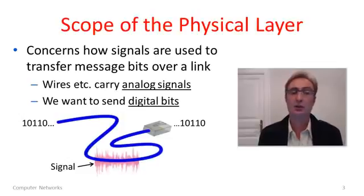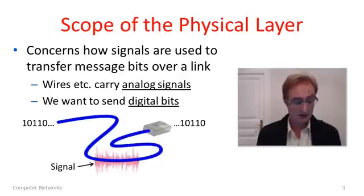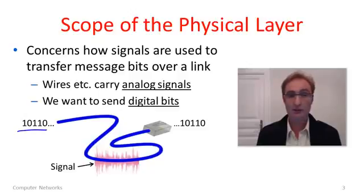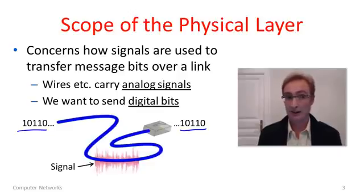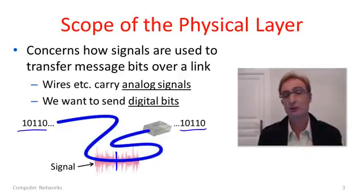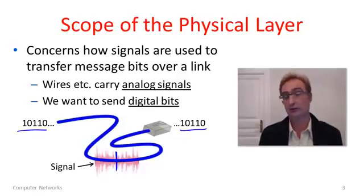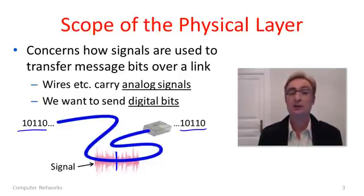The physical layer is all about how we use signals to represent bits so that we can convey bits across a physical channel or a simple link from one end to the other. If we just consider a wire as an example, we've got bits going in on the left — binary digits, the message we want to send — and bits coming out on the right. But if you were to cut the link in the middle, you wouldn't see these bits anywhere. What's carried across a physical channel like a wire, wireless, or fiber optic is an analog signal. So we need some way to represent digital bits with those analog signals. That's really the heart of the physical layer.